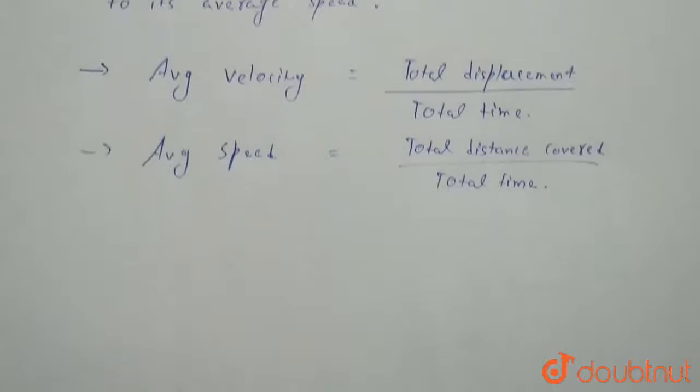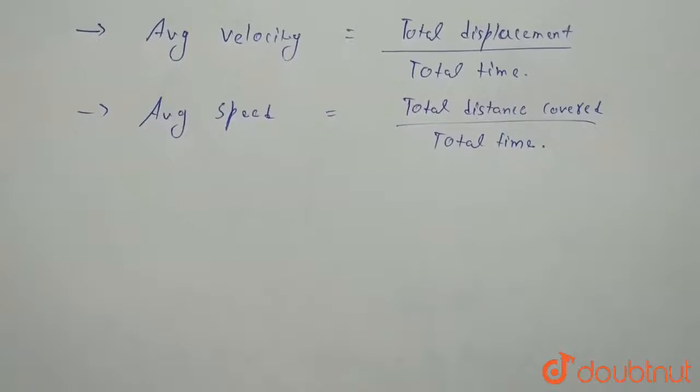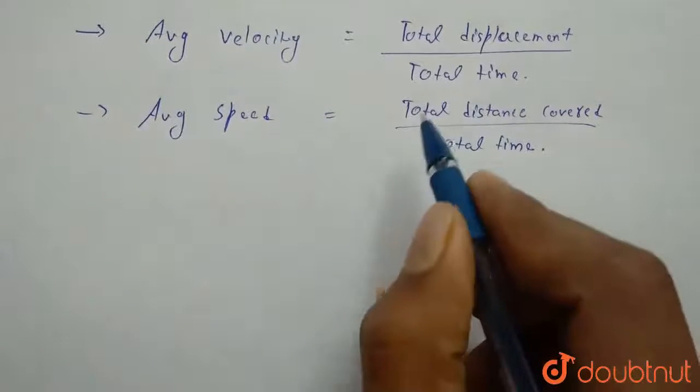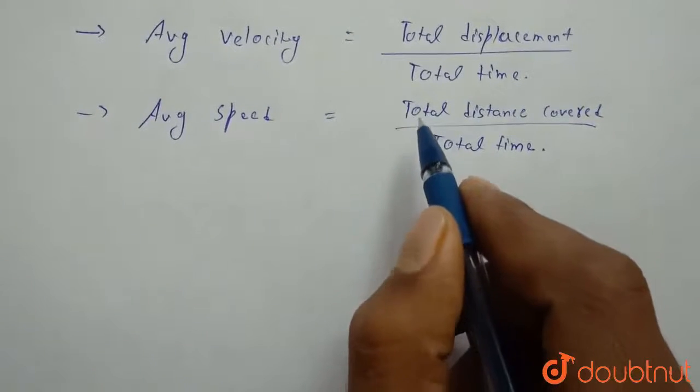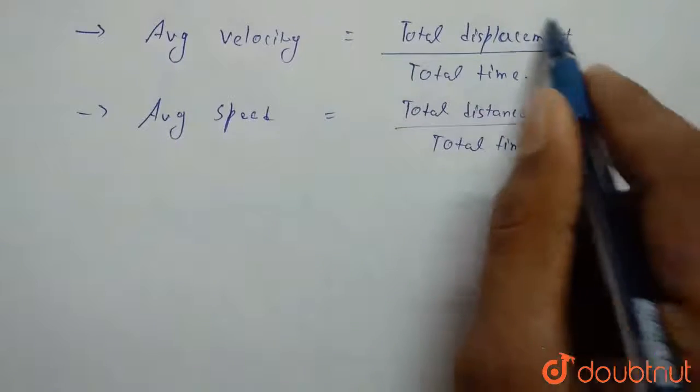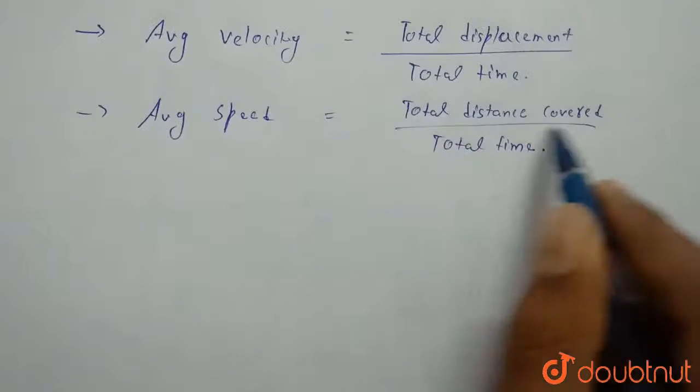If we want that average velocity equal to average speed, then what we have to do? We have to make total displacement equal to total distance covered.